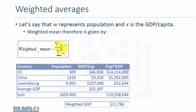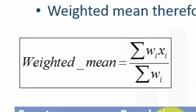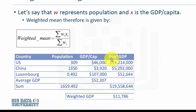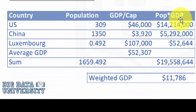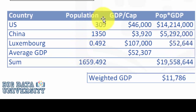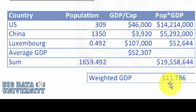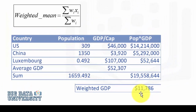The formula for weighted mean is presented here. Essentially, you take the population in millions and multiply it with the per capita GDP. You get three numbers — one for the U.S., one for China, and one for Luxembourg. Then you sum up the populations for the three countries and divide the summed product of population times GDP per capita, which is 19 million and change, by 1,659. The weighted GDP ends up being $11,786.